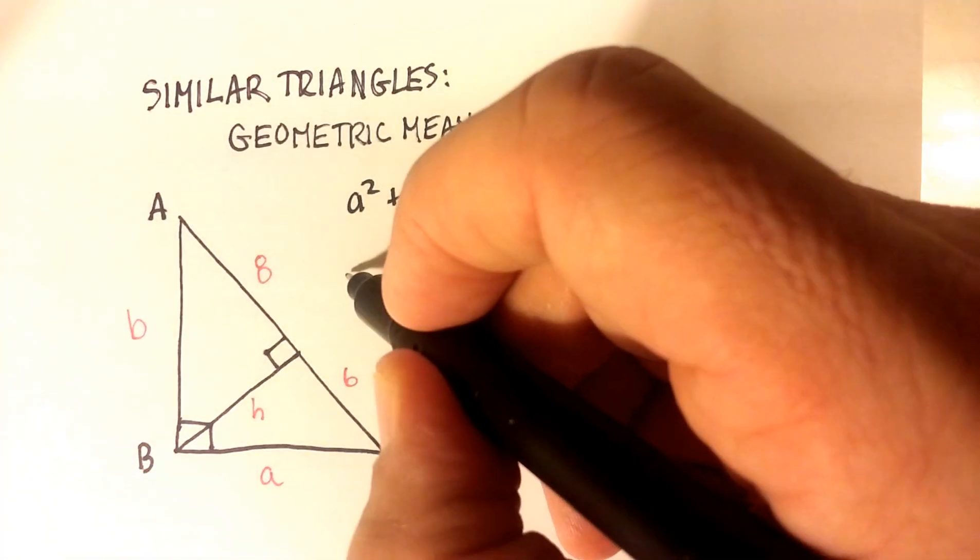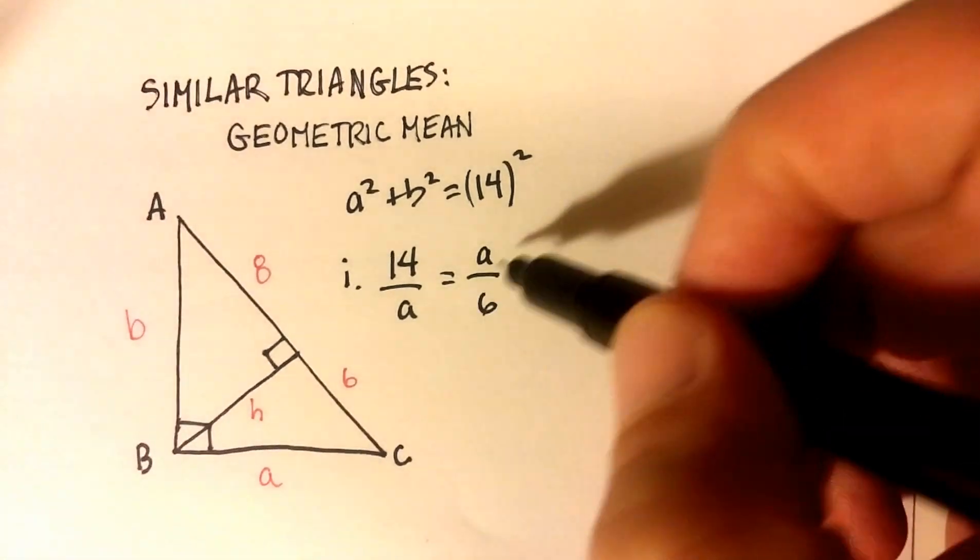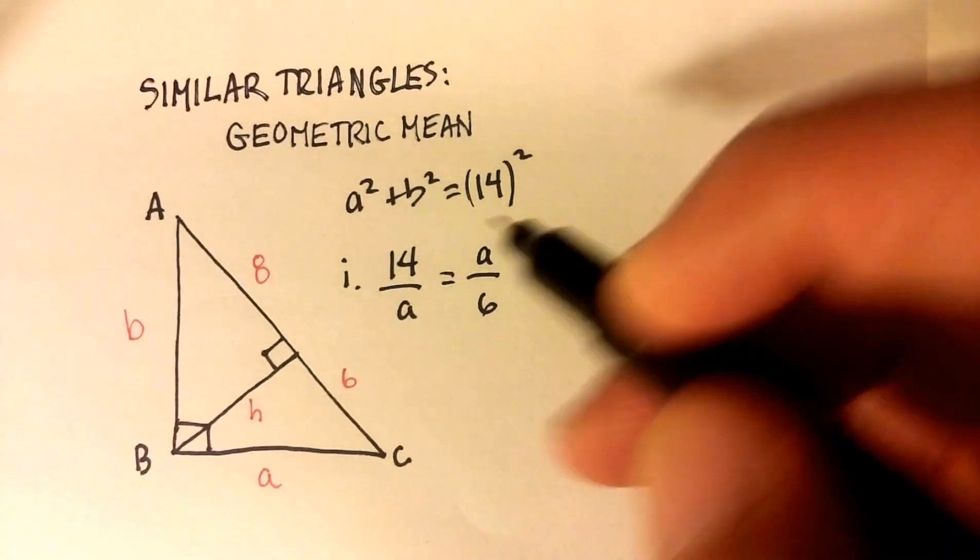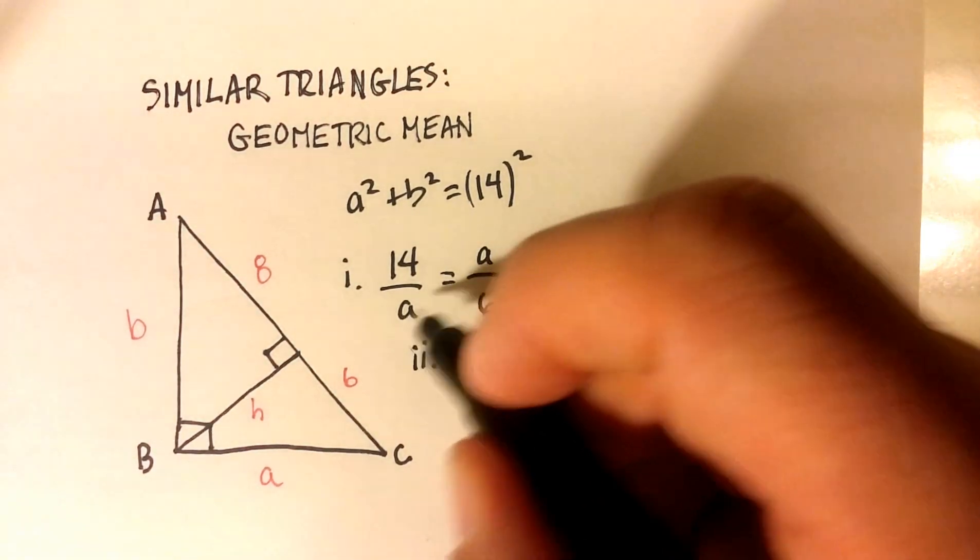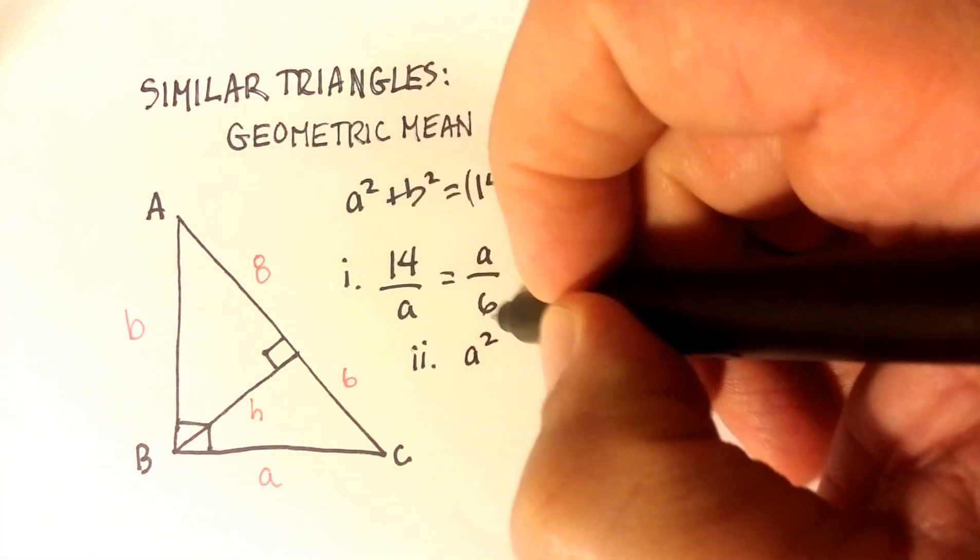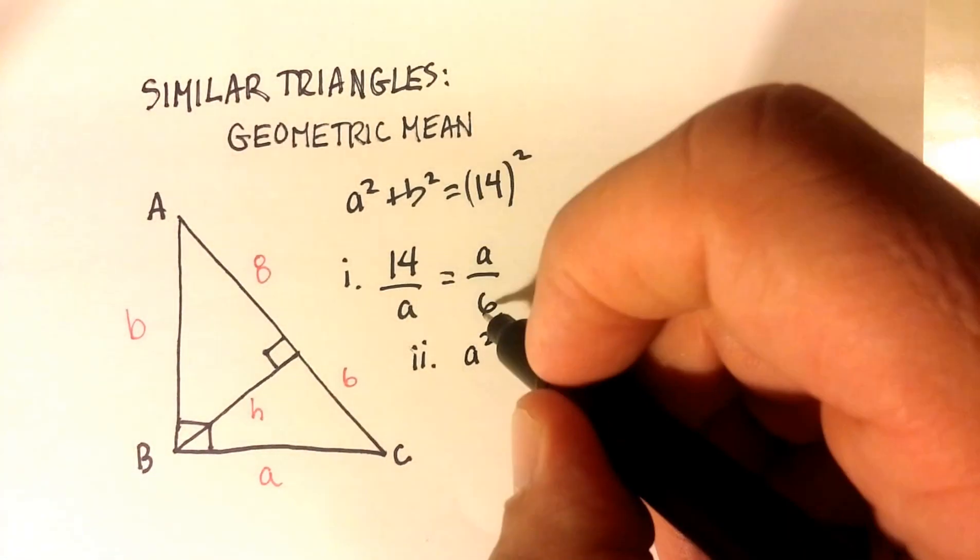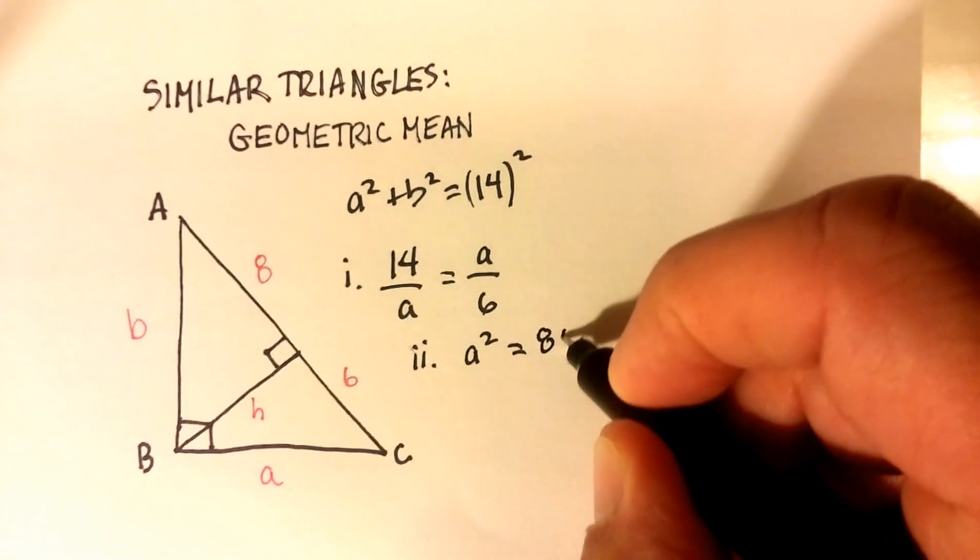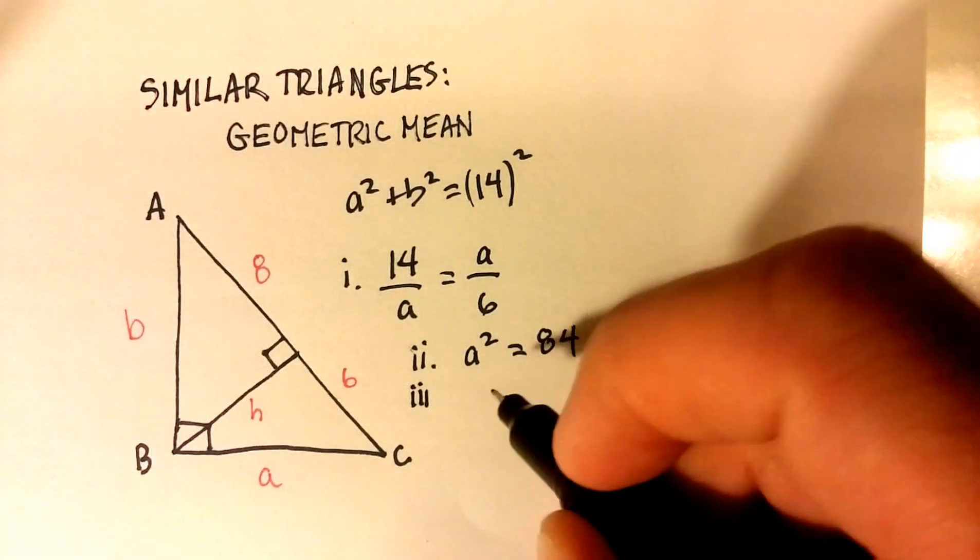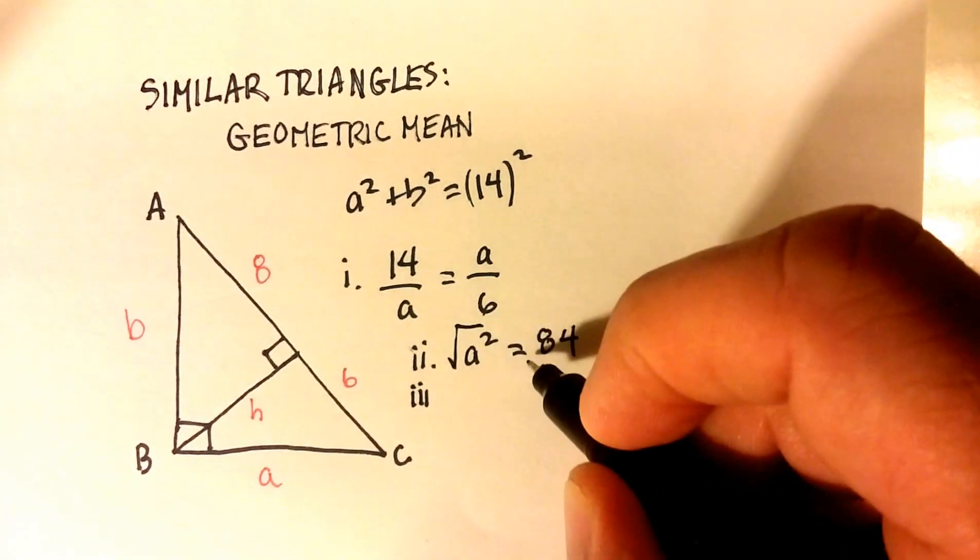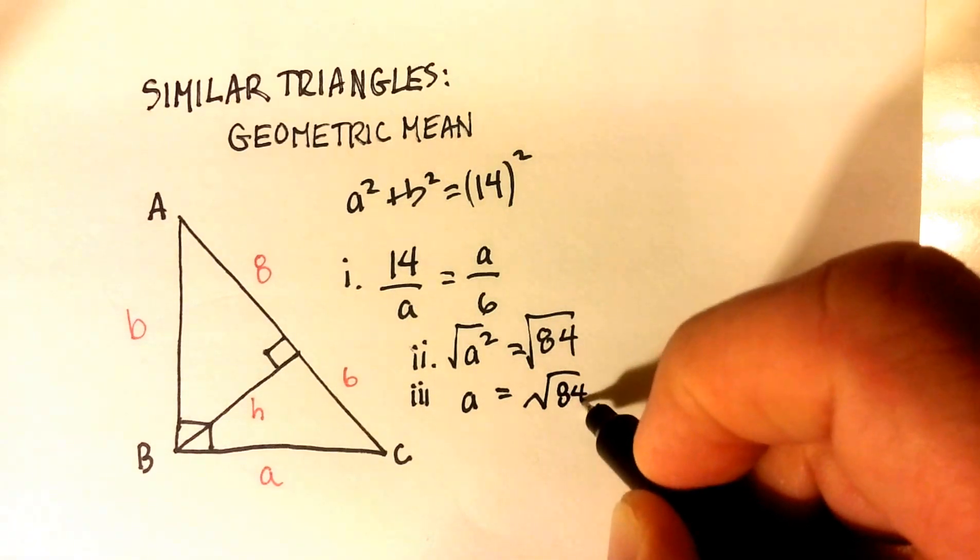And what we've done here is we've set up this proportion with one variable, and we can use the geometric mean to solve for that variable. So we're going to do cross products. It's going to be A squared is equal to 6 times 14, and that's going to be equal to 84.